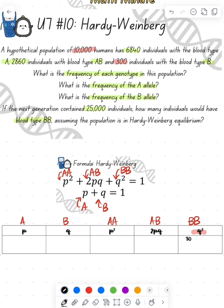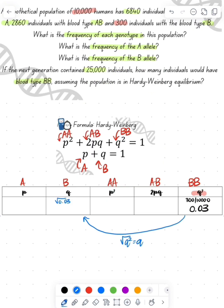Now because of the fact that we know that Q squared is 0.03, now I should be able to solve for Q by taking the square root of Q squared. And so that's going to give me 0.173.